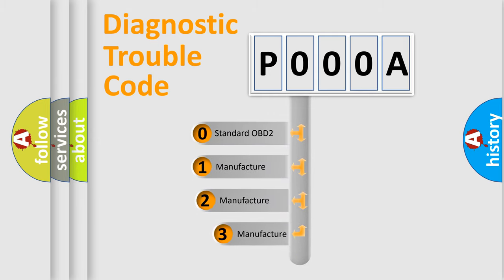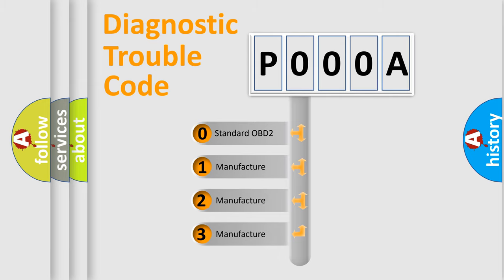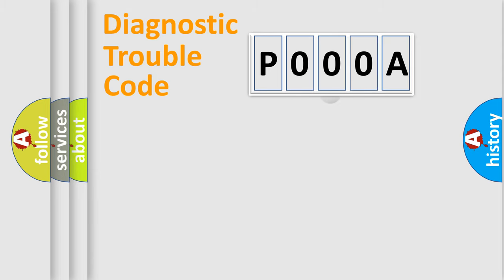If the second character is expressed as zero, it is a standardized error. In the case of numbers 1, 2, 3, it is a more precise expression of the car-specific error.